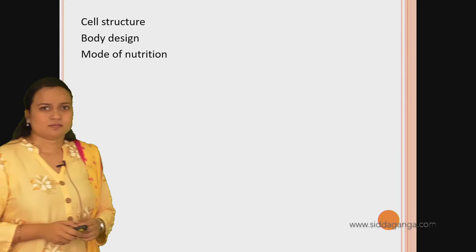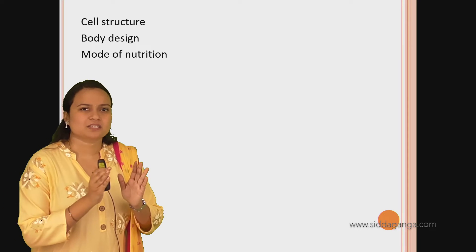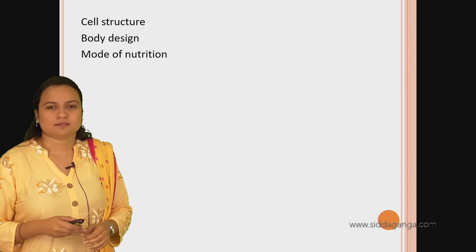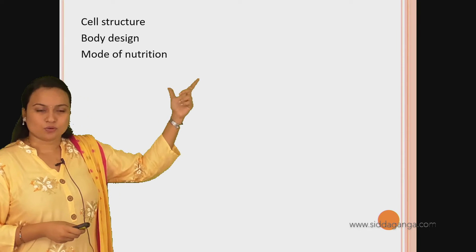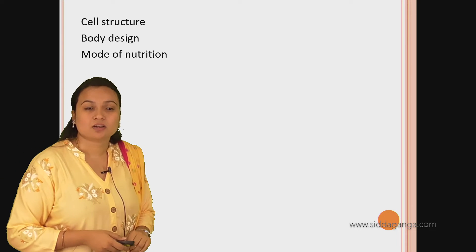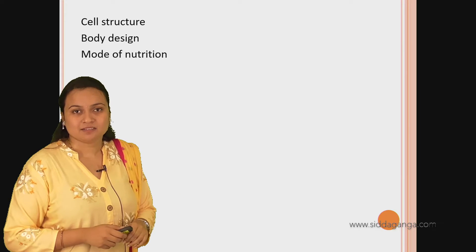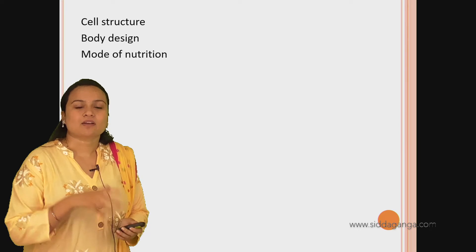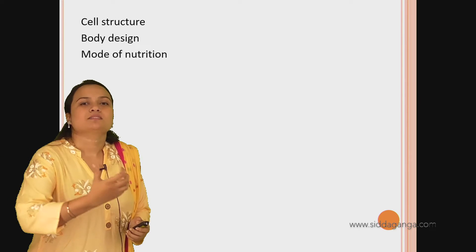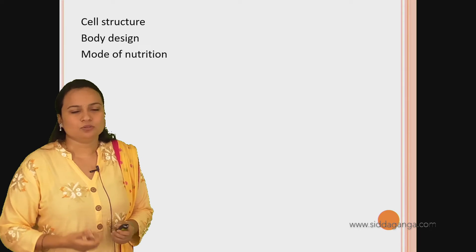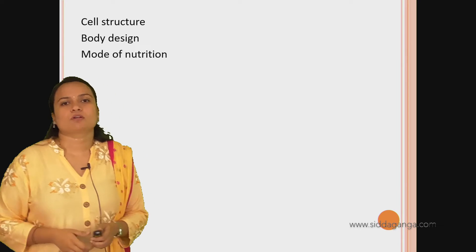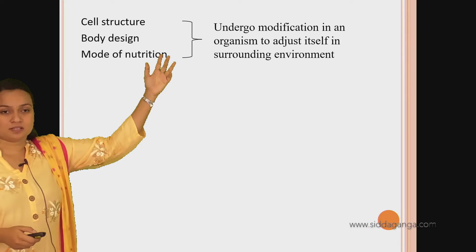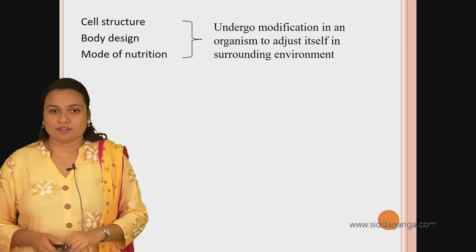I said modifications - where do modifications take place? Initially, modification will take place in the cell structures. Due to the DNA mechanism, variations take place. So initially, modification in the cell structure will lead to a change in the body design. When the body design changes, the mode of nutrition will also change, because an organism based on its body design will consume food from the environment. So modification involves cell structures, body design, and mode of nutrition undergoing change.